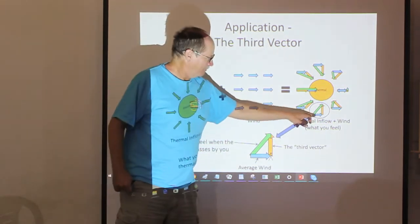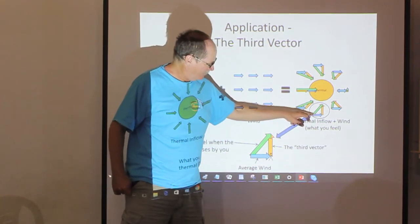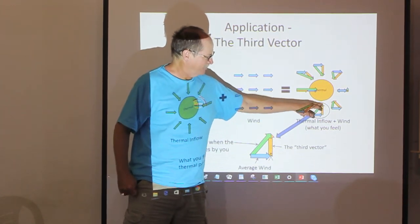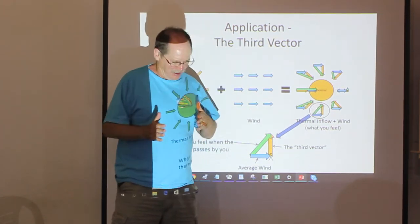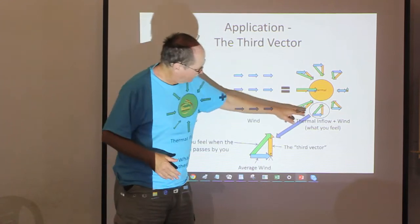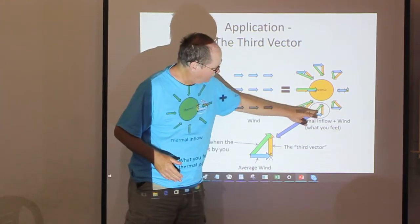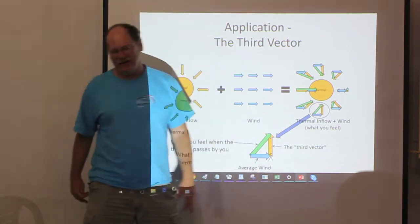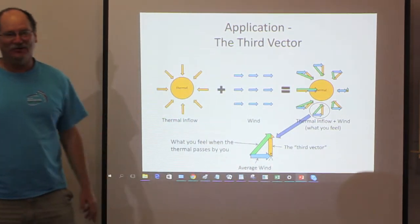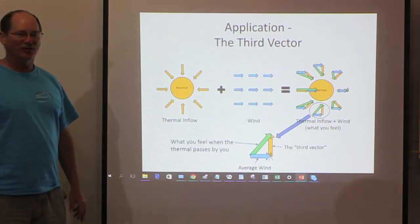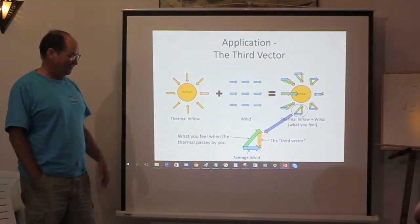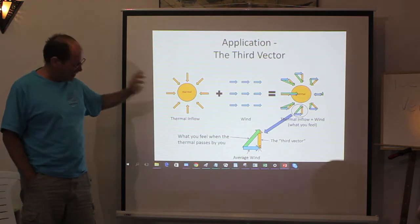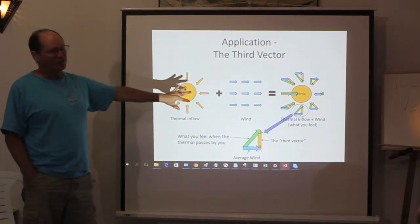If you're to one side of the thermal, you feel the wind, you know the average wind - what is the difference between the two? It's vector math, and that third vector is always pointing straight towards the thermal. If you get nothing else from tonight, this is the most important thing.